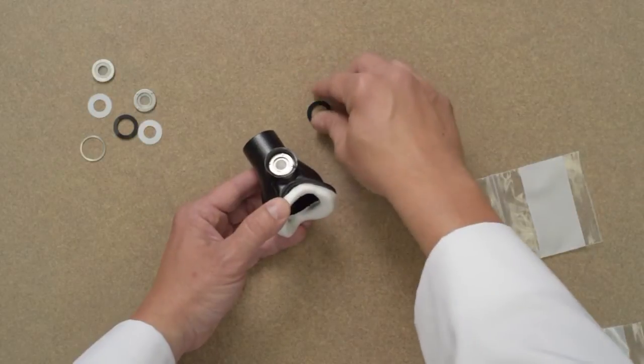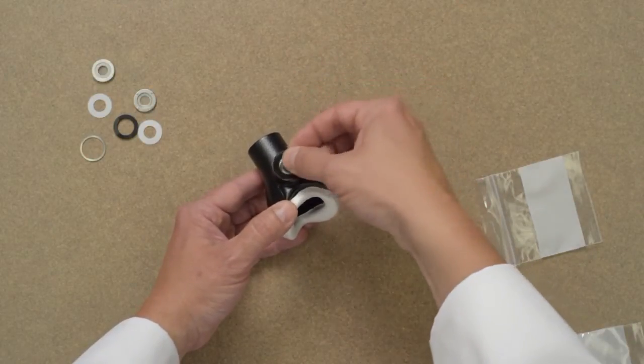This orientation is important. While using the mask you want the exhale air to blow away from your face. Finally insert the black retainer washer to hold the system in place.